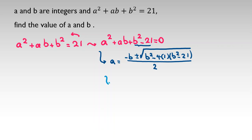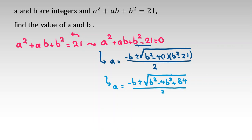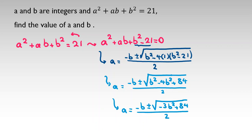Simplifying, a equals negative b plus or minus the square root of negative 3b squared plus 84, all over 2.